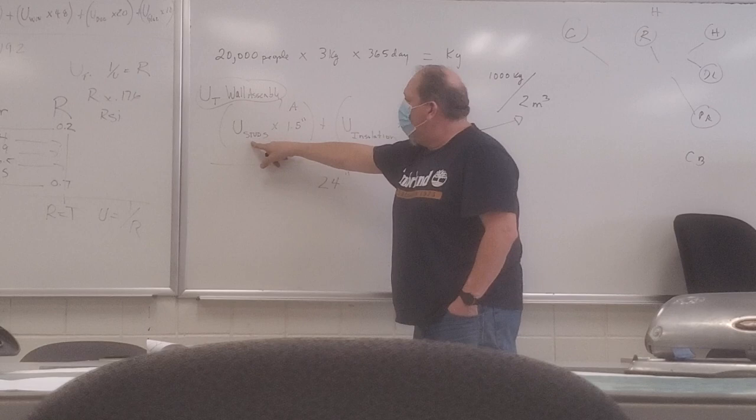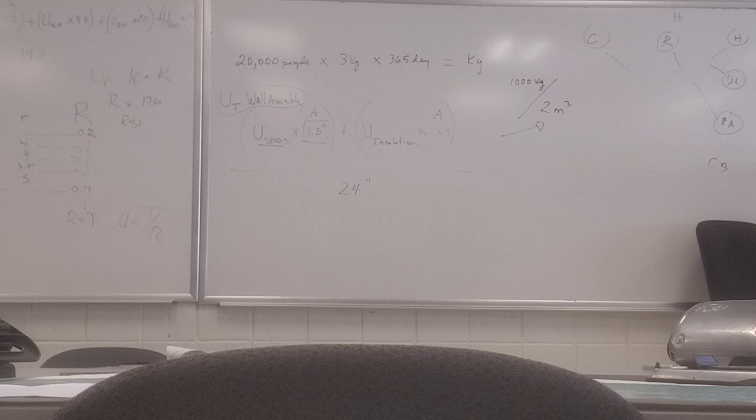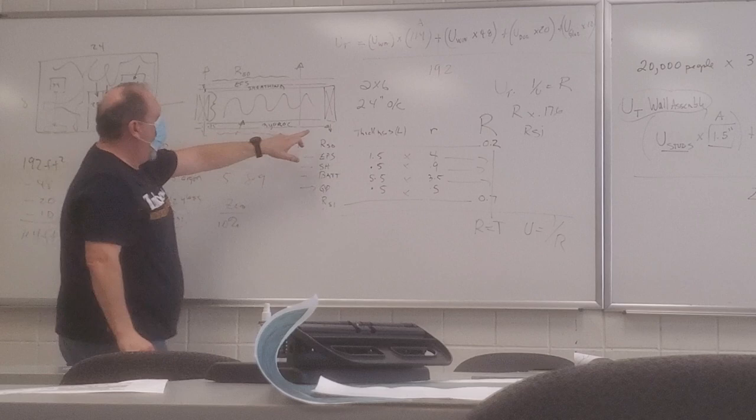So in this particular case, our studs, we take the U-value that we calculated, we put it in here. Now we need the area. The area of the studs in a 2x6 is really 1.5 by, and 1.5 here. It's center to center. So that's half of that was 0.75, plus half of that is 0.75. So that's why I got the one.